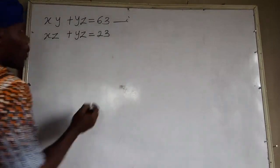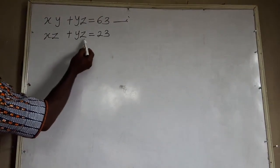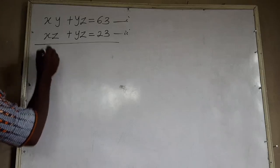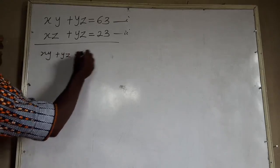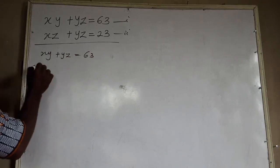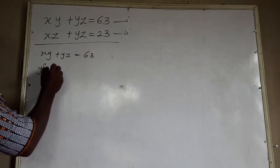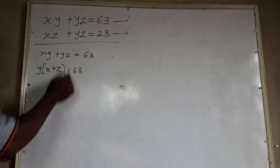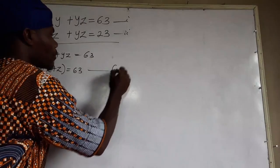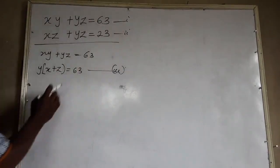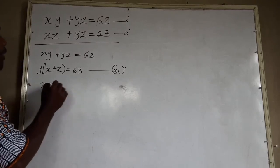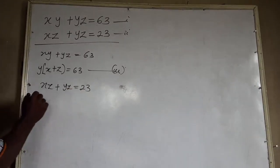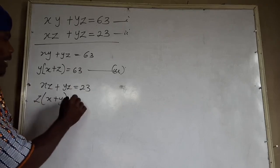Let's start. We have a question like this: xy plus yz is equal to 63 — let's represent this as equation one. xz plus yz is going to be represented as equation two. From equation two, you discover that z is common: z(x plus y) is equal to 23.